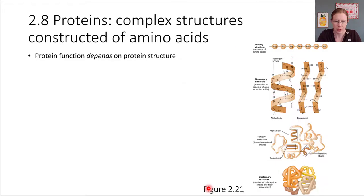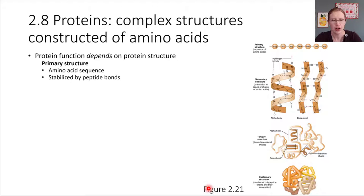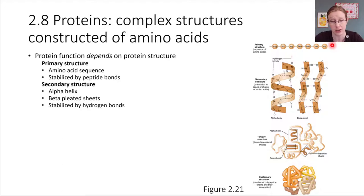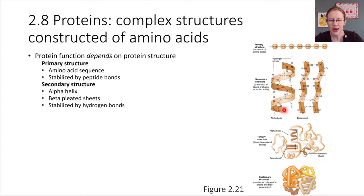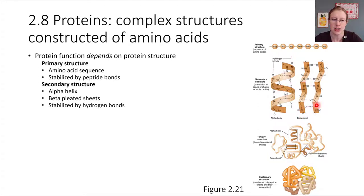We've been talking about how you can connect amino acids together in a particular series — it turns out that's the primary structure level. It's just what order the amino acids are connected in. Depending on that order, it's going to influence the next level: the secondary structure. This has to do with interactions between adjacent amino acids — for example, if two adjacent amino acids are negatively charged, they'll repel each other and create a bend in the chain. This leads to spirals forming, or what's called a beta pleated sheet, where the chain zigzags back and forth. These structures are stabilized by hydrogen bonds.